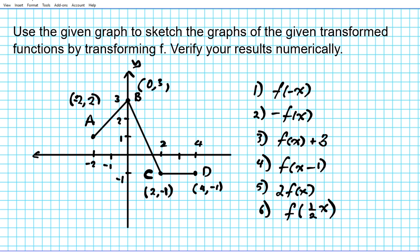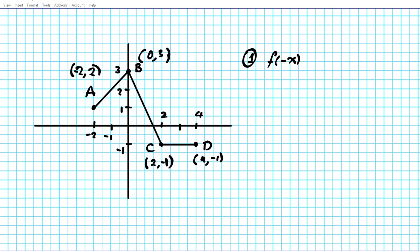So let's take a look at the first one. This graph right here is y equals f of x, and for question one we are to graph f of negative x. Let's start by writing down what the transformation looks like using our verbal representation first, then we're going to look at the graphical representation and then we'll confirm using numerical methods.